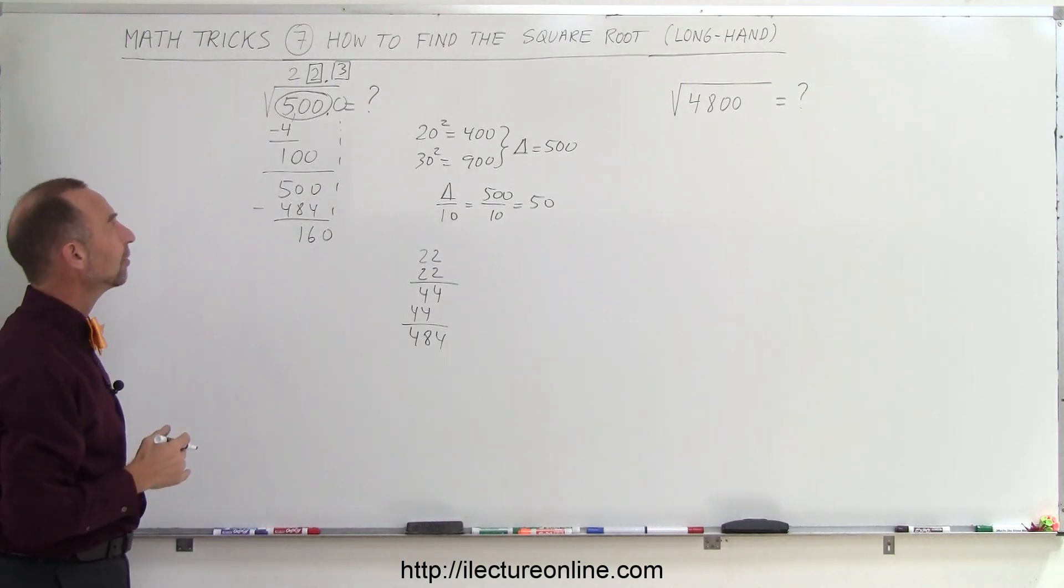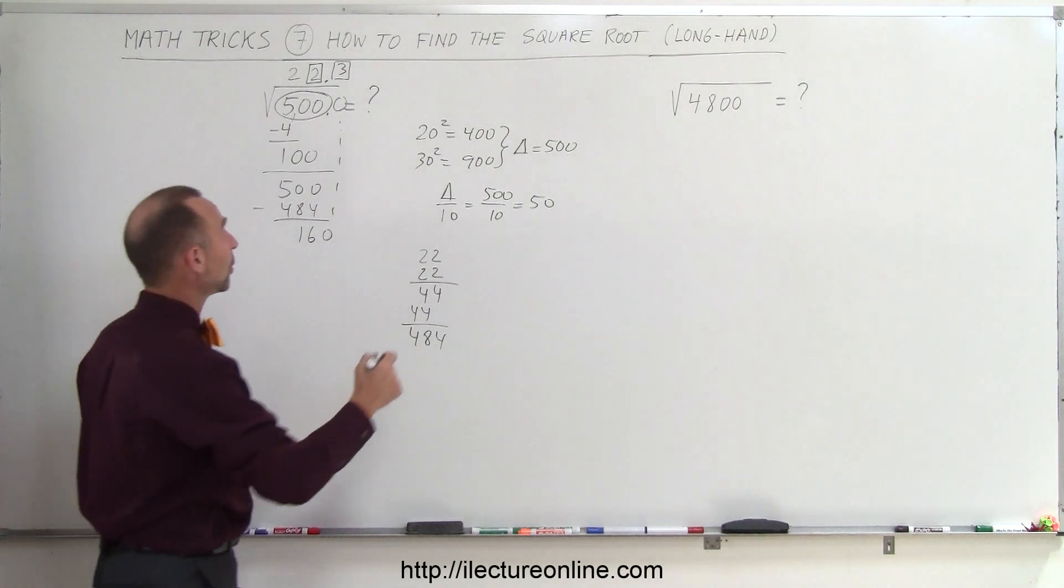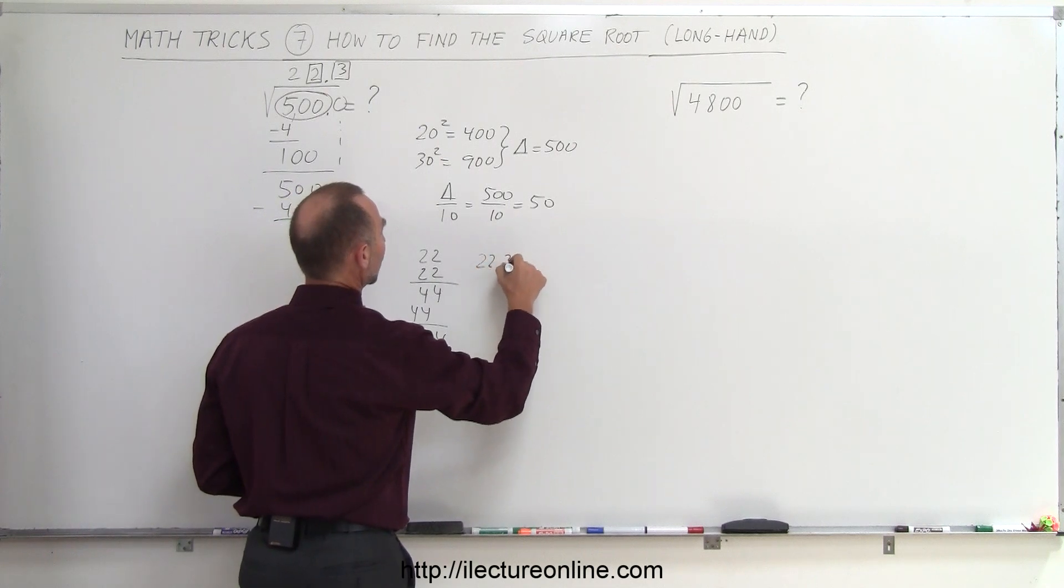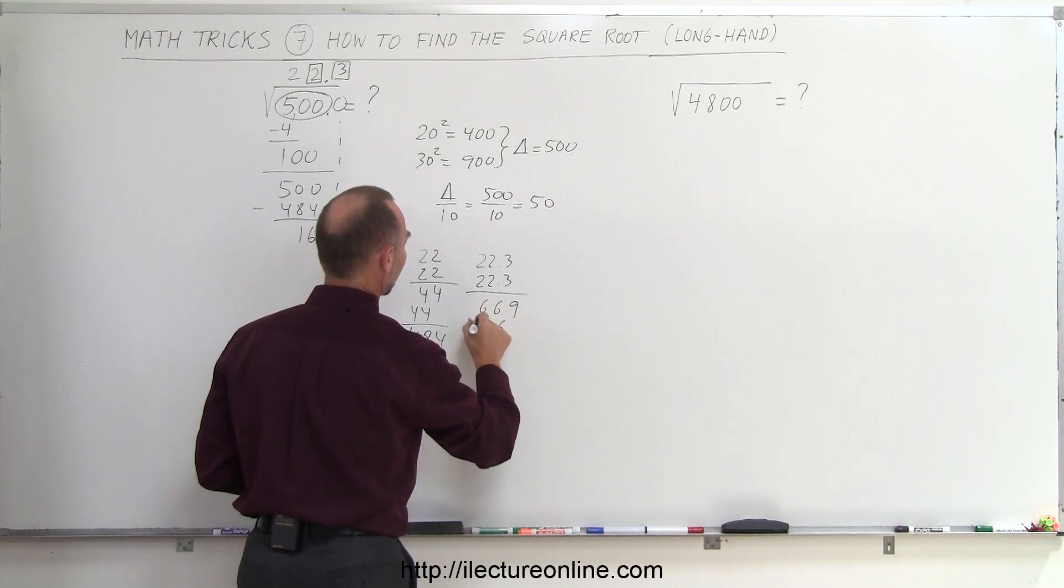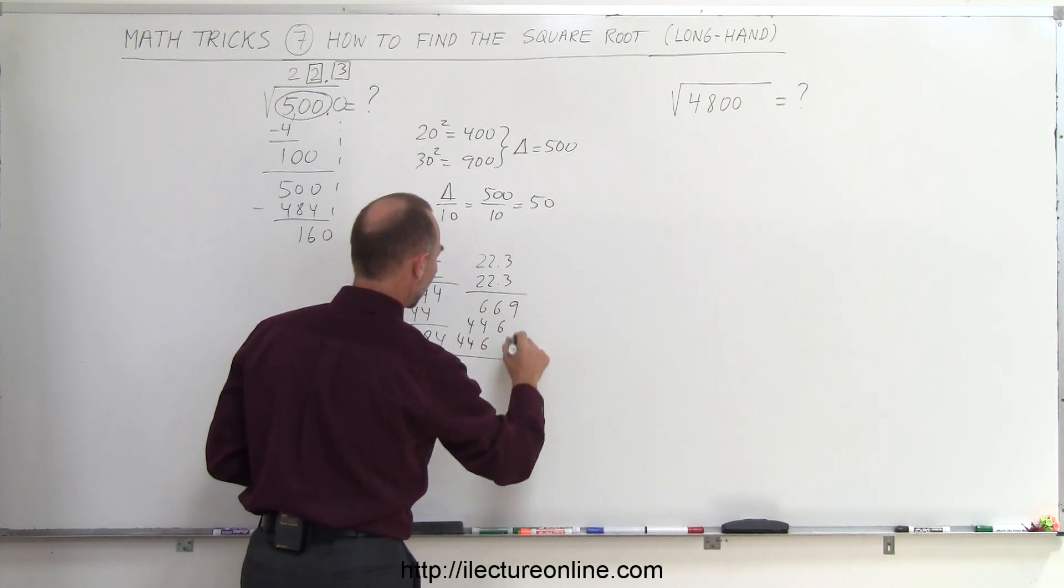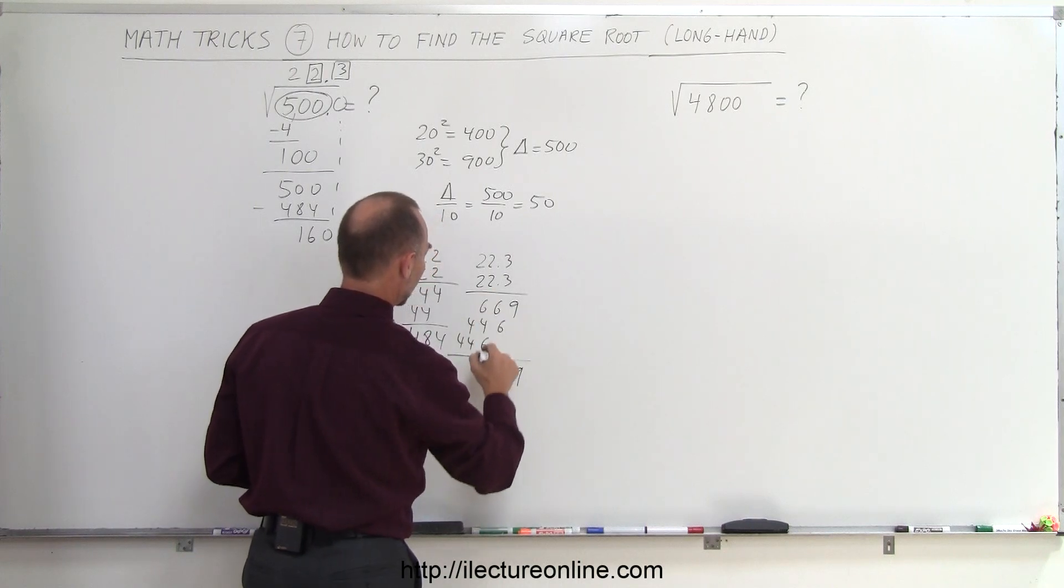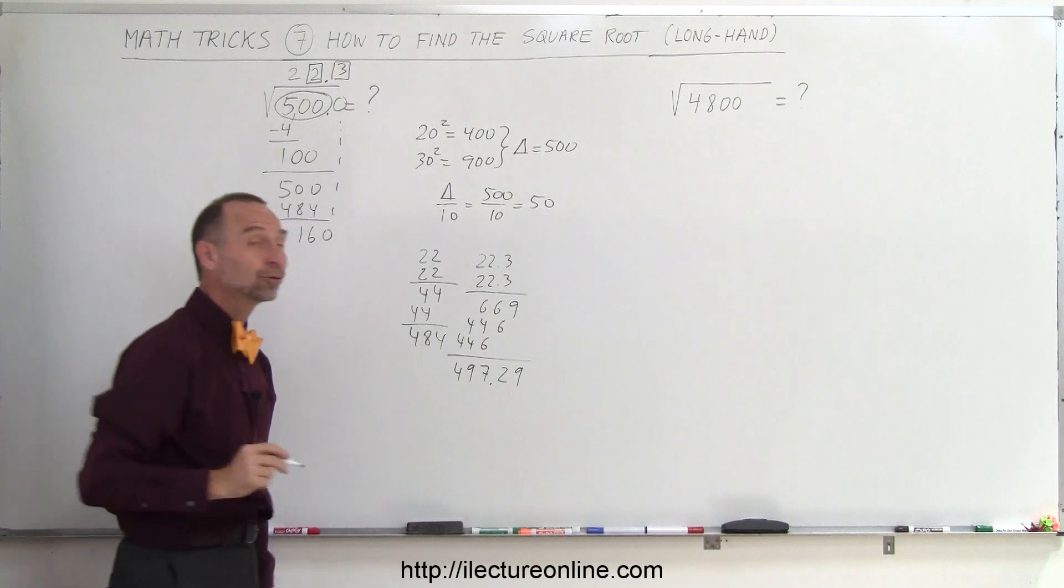If I want another decimal place, I can continue doing this. I'm going to multiply 22.3 times 22.3. That gives me 9, 6, 6, 6, 6, 4, 4, 6, 4, 4. Add it all up, I get 9, 2, 1, 12, 16, 7, 1, 9, and 4. I get 497.29.